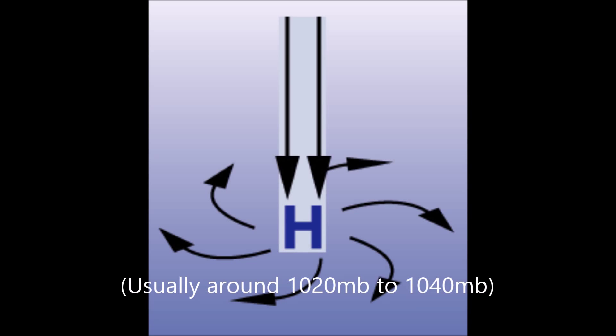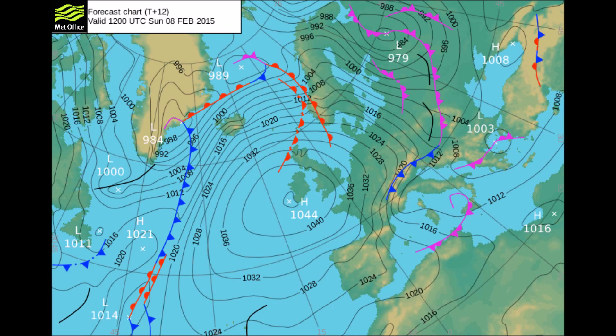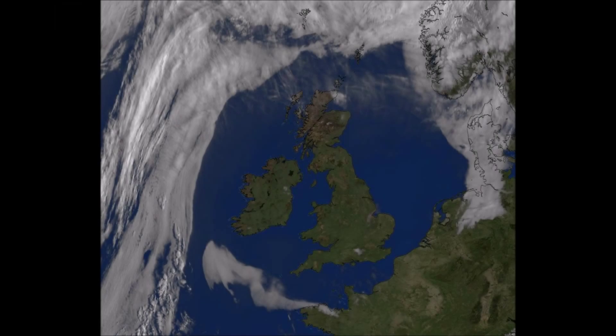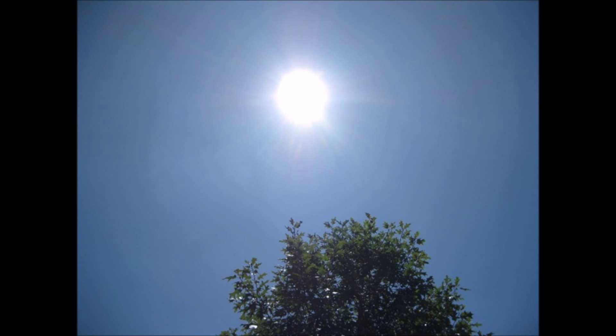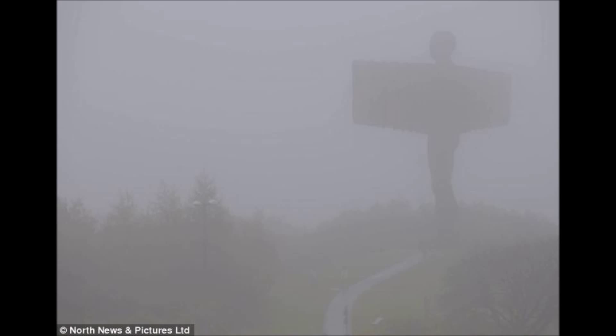An anticyclone is an area of high atmospheric pressure. They are associated with clear skies, sun in the summer, frost in the winter, and fog, mist and smog all year round. The high pressure is caused by the sinking of air, so any moisture in the upper troposphere is brought down to the surface, hence no clouds form.